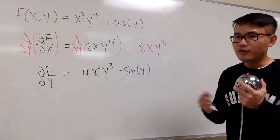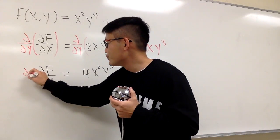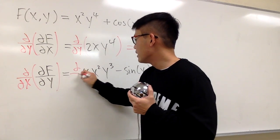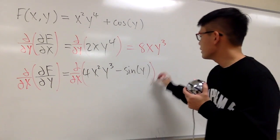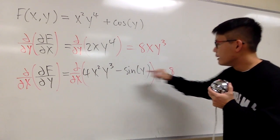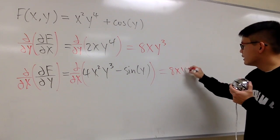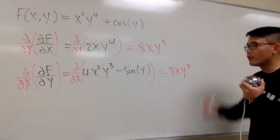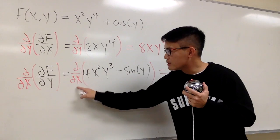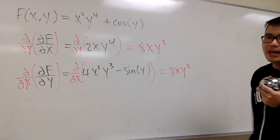If you do this in a different order — differentiate with respect to y first and then with respect to x — for this term, bring the 2 to the front, so we have 8. Subtract 1, so we have x to the first power. Y to the third power stays. The derivative of negative sine y in the x world is equal to 0. And check this out — this and that are the same.